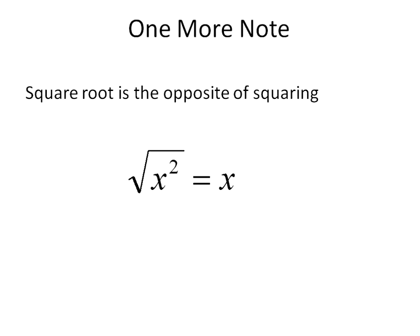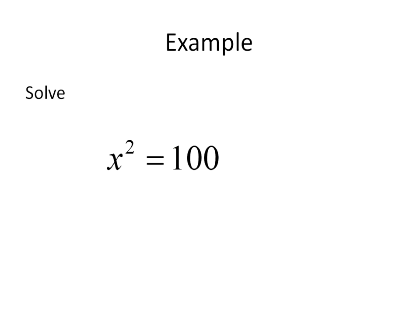One more thing about square root is this. The square root of x squared is equal to x. And we'll show that in just a second. Those are opposite operations. You know how we had, like, addition is opposite of subtraction. Multiplication is the opposite of addition. Well, squaring a number like x squared is the opposite of taking the square root of a number. And you'll use that when you solve a question like this.